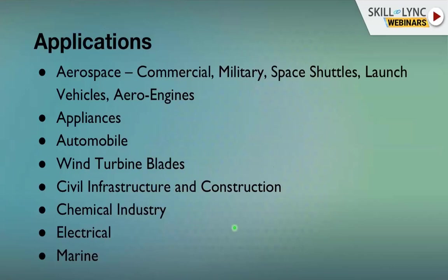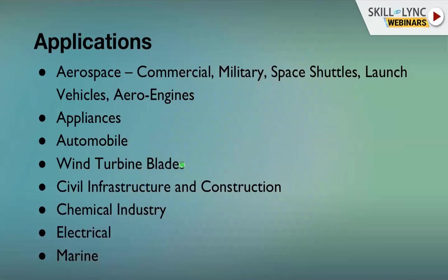Covering applications overall: Polymer Matrix Composites are mainly used in aerospace — both commercial and military — space shuttles, launch vehicles, and aero engines, including fan blades and fan casings. Composites are also used in appliances and automobiles, mainly MMCs and PMCs. Wind turbine blades are another key application.